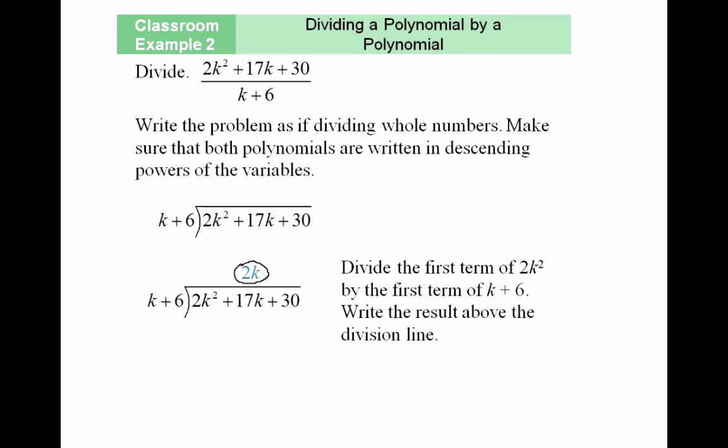You need to multiply this 2k by both terms. In other words, 2k has to be distributed by k+6. Now if I multiply this through, what do I get? 2k² plus 12k. I would record that right here: 2k² + 12k.